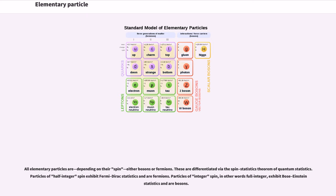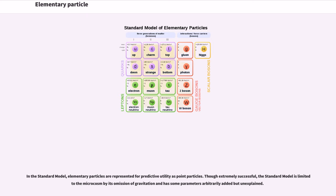All elementary particles are, depending on their spin, either bosons or fermions. These are differentiated via the spin-statistics theorem of quantum statistics. Particles of half-integer spin exhibit Fermi-Dirac statistics and are fermions. Particles of integer spin exhibit Bose-Einstein statistics and are bosons.